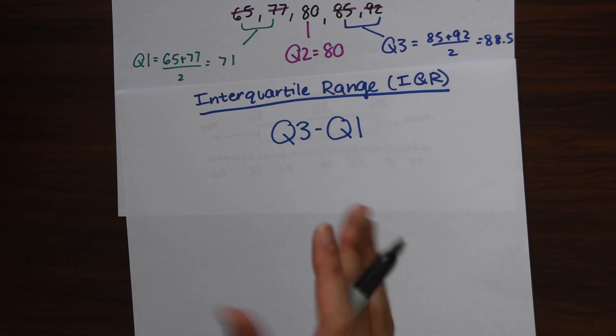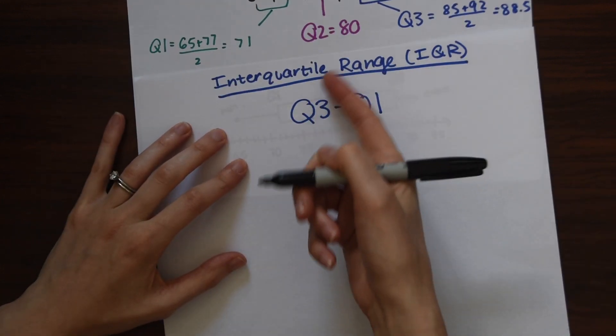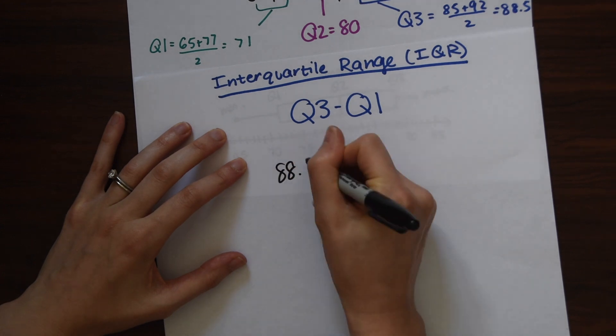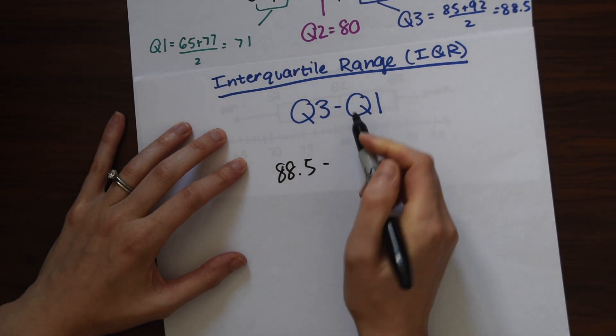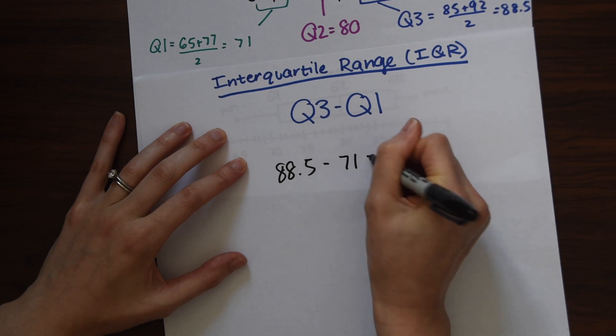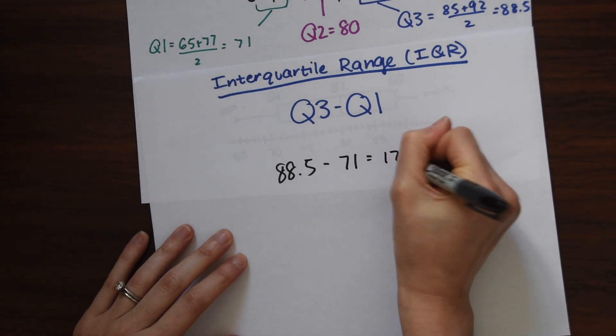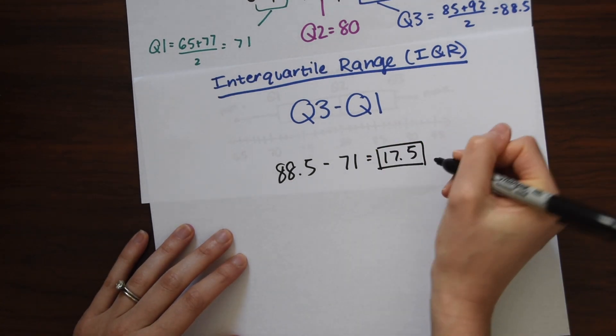So we just found those two, right? So we can easily find the interquartile range of our data. So quartile 3 we see is 88.5 minus quartile 1, 71. So if you just plug that into your calculator, you get 17.5. And that's our interquartile range.